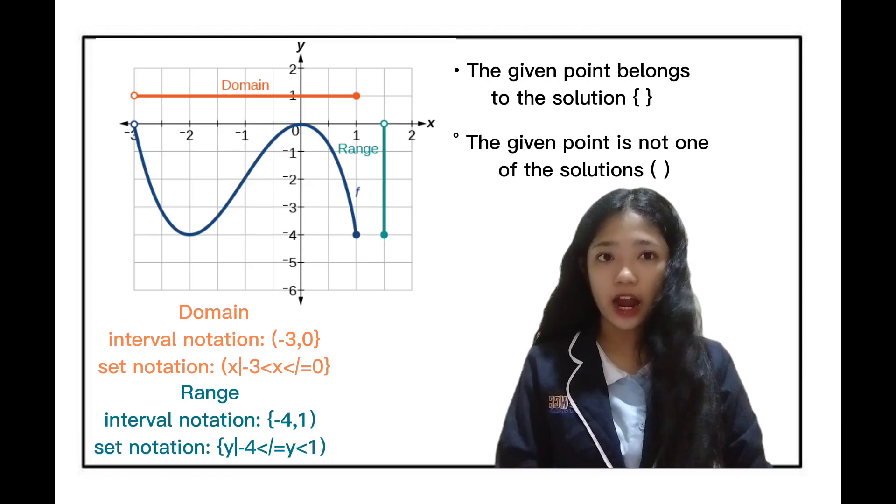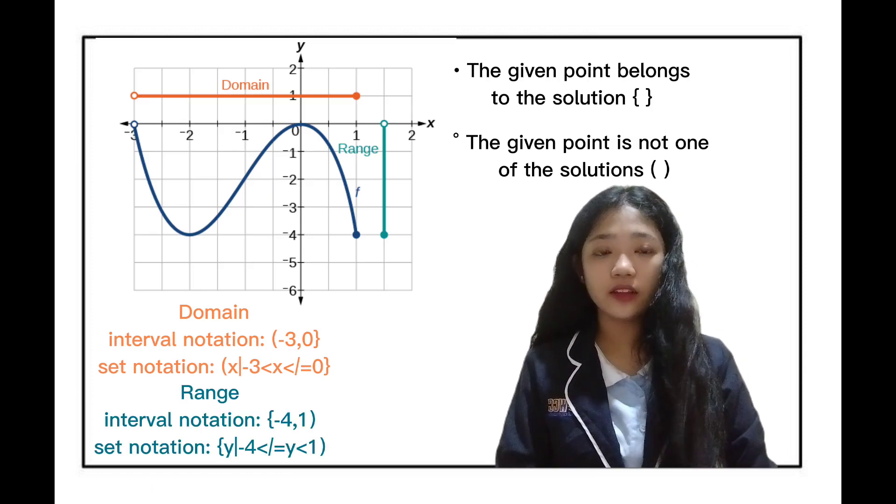Let's now identify our domain and range using a graph. As you can see in our graph, if the given point is shaded, we will use a bracket. If not, we will use parenthesis.